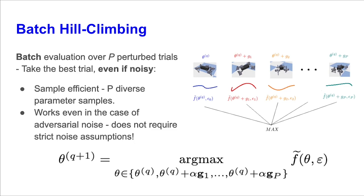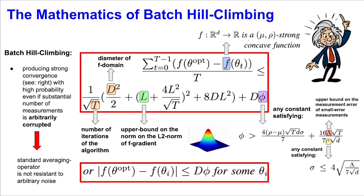These issues lead us to our batch hill-climbing operator, which takes p perturbations around the input parameter and takes the best trial, even if its evaluation was noisy. This is shown in the figure, where each of the p perturbations leads to different policies shown by different colors. This algorithm is sample-efficient, as each perturbation is a diverse parameter which leads to better exploration. Furthermore, it avoids strict assumptions on the noise and works even when the noise is adversarial. In fact, we have theoretical guarantees that batch hill-climbing is convergent for strongly concave objectives even when the noise is adversarial and a fraction of them can be negatively unbounded, as shown in this expression. The convergence rate's constants depend on the properties of the concave function, such as its smoothness and Lipschitz constants, as well as its diameter, along with the fraction of unbounded noises and a fraction of small error noises. The proof relies on the fact that the batch mechanism with high probability selects a good ascent direction even when there is noise.